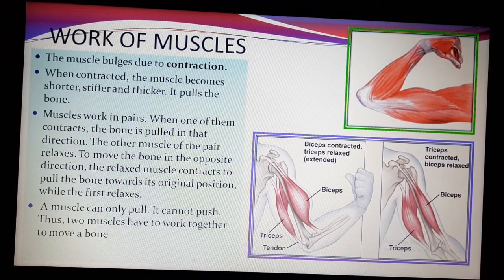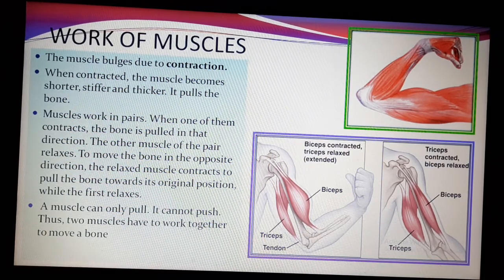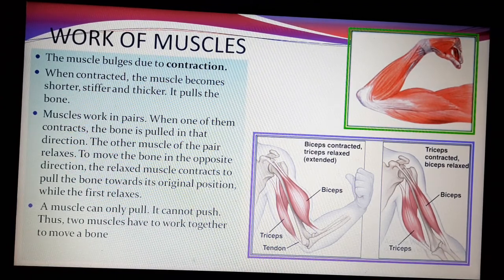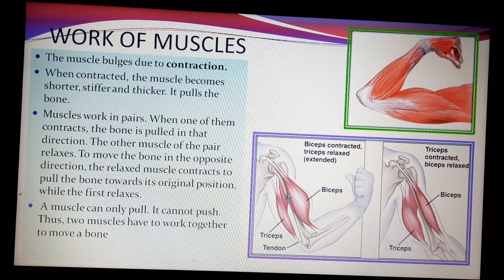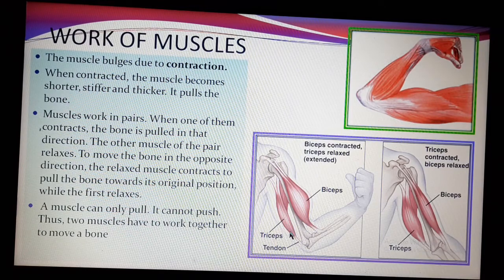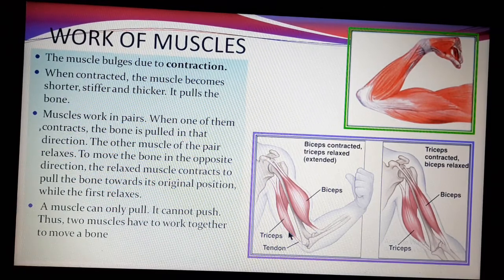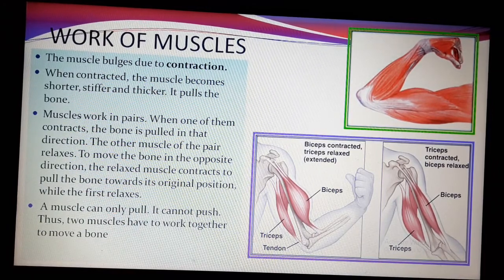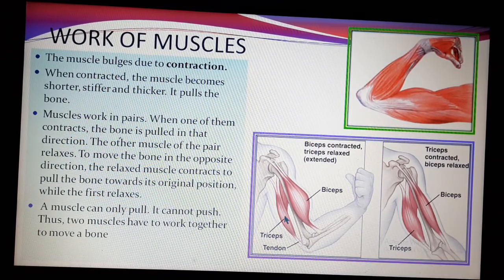Due to contraction, the muscle becomes short. Muscles always work in a pair — here we are showing one pair of muscles. For moving the body parts, within the pair, when one muscle is contracting, the other one is in a relaxed position. Relaxed position means it is in its original shape and original position. And this happens vice versa as well.